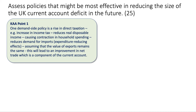My first KAA point is that you could reduce the deficit on the current account by a demand-side policy — perhaps a rise in direct taxation. If you lift income taxes, that could mean an increase in the rate of income tax or a fall in income tax allowances. Some kind of increase in the direct tax burden cuts real disposable incomes, which causes a contraction in household spending. Consumption is the biggest part of aggregate demand, and a fall in household spending reduces the demand for imports — we call this an expenditure-reducing effect. Making the working assumption that the value of exports remains broadly constant, if people are spending less on imports, that will lead to an improvement in the net trade balance (X minus M), which is a component of the current account.